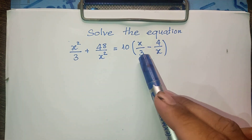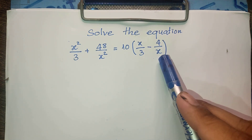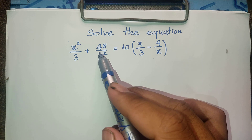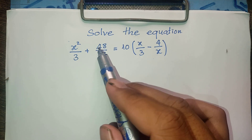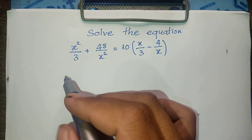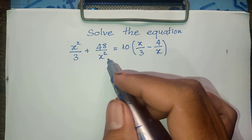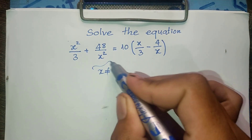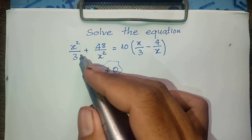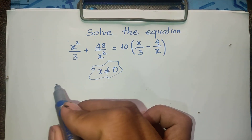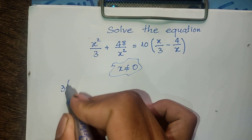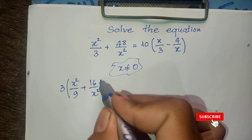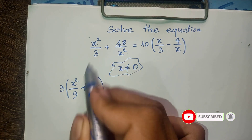You see that x divided by 3, and minus 4 divided by x — I can change this. We must note that x is not equal to 0. Now I take 3 out. So we get 3, and multiply its square divided by 9, plus 16 divided by x squared. When we simplify it, we get 3 times that expression, and this equals 14.